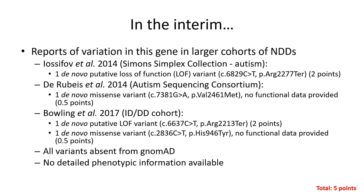In the years that followed, there were a few additional reports of variants in this gene in individuals being studied as part of large neurodevelopmental disorder cohorts. The first two variants were identified in autism cohorts, while the last two were in intellectual disability cohorts. All the variants were de novo, with two putative loss of function variants and two missense variants without supportive functional information, all absent from gnomAD. Using the scoring approach we reviewed, this information would be given five points. As of 2017, if this was all the information you had, this gene would be classified as limited. So you can imagine why it was perhaps not listed in OMIM Morbid or included on any testing panels when we first looked into this.